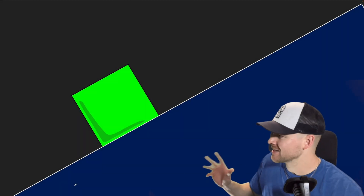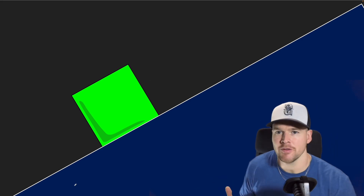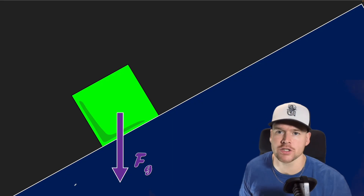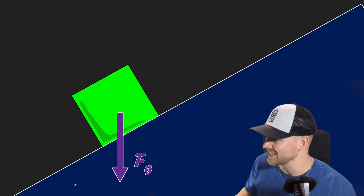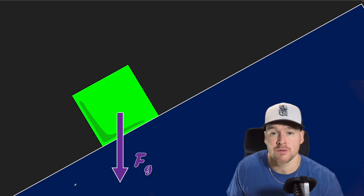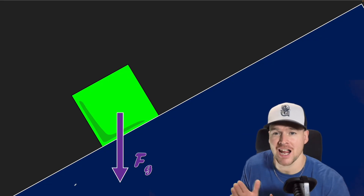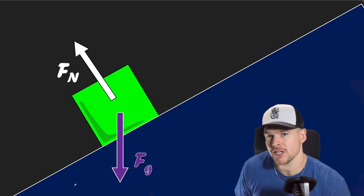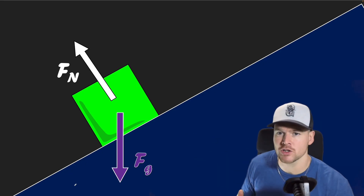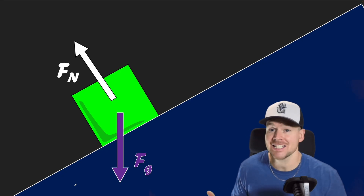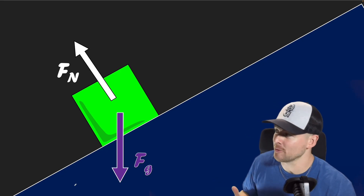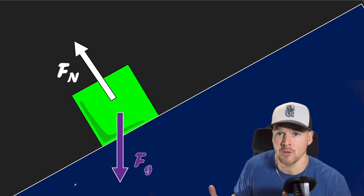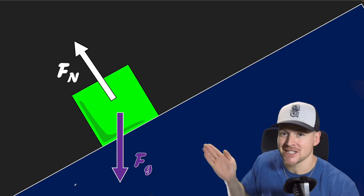Let's start off with a mass on the inclined plane and look at the forces that are going to be at play. One that's always going to be there is the force of gravity — it's going to be pulling directly down. There is also a surface, so we're going to have a normal force. The normal force looks different; it's pushing up at an angle because the surface is tilted, so the force is perpendicular to the surface but not straight up — it's at an angle.